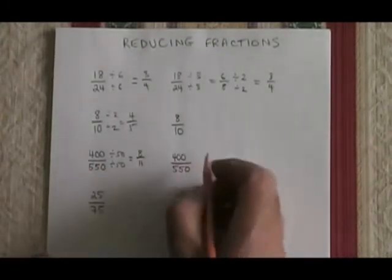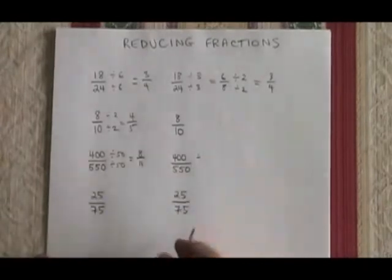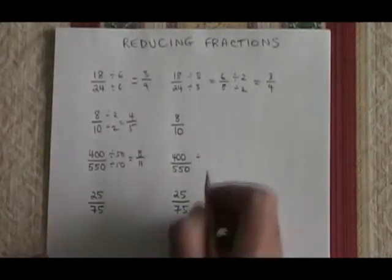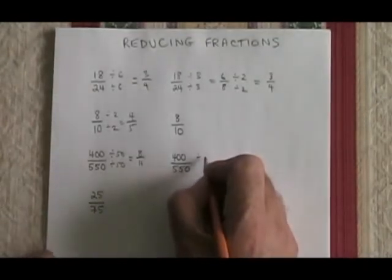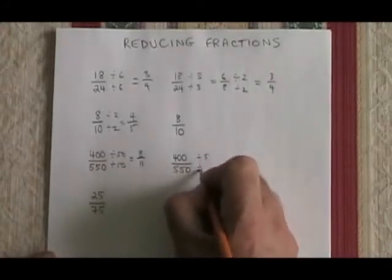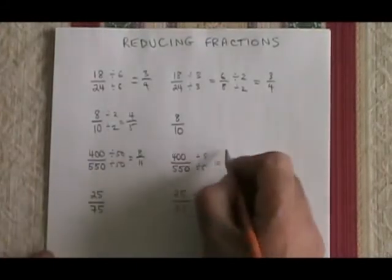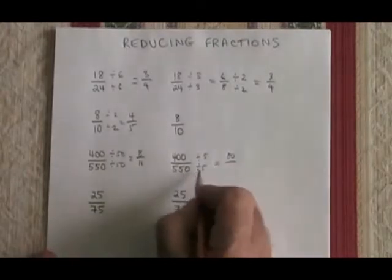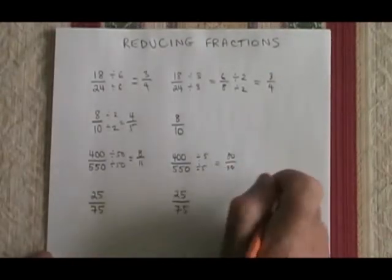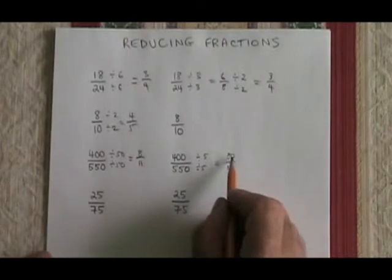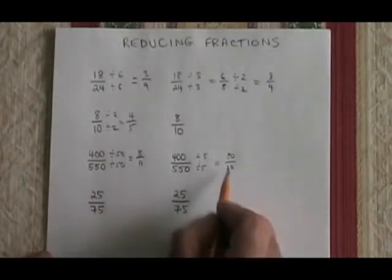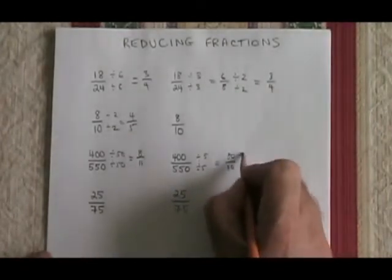But here is another example where we could have found a common factor, but that wasn't the greatest common factor. We could have divided both top and bottom by 5, for instance. 400 divided by 5 is 80. 550 divided by 5 is 110. And then we might realize, oh, look, 80 and 110 both have a zero at the end. They have a common factor of 10.